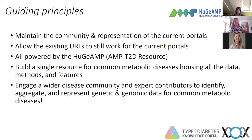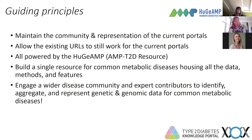We want to allow all existing URLs to be maintained so that papers published one or two years ago can redirect to the new resource as we build it. This is all powered by the AMP T2D resource we've been building, which has expanded to other disease areas — the same software platform, the same data, the same methods. It's all a common integrated resource. We want to build a single means of representing that resource in the common metabolic disease space, housing all the data, all the methods, and all the relevant features.